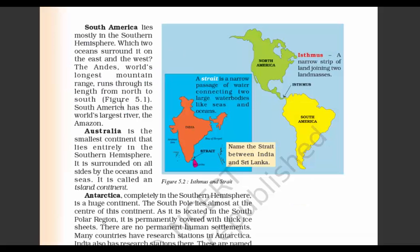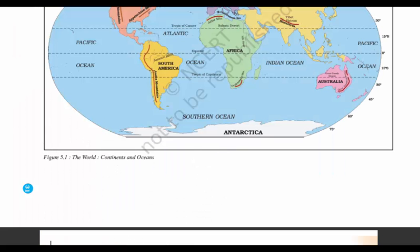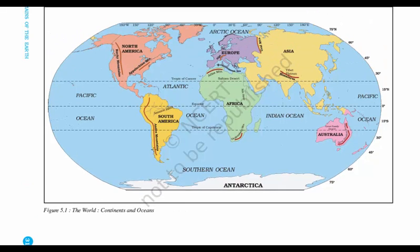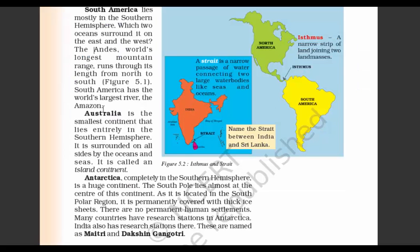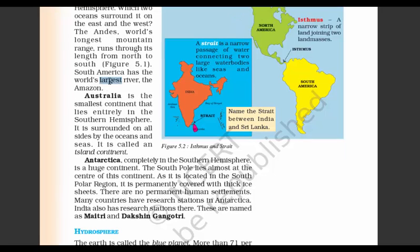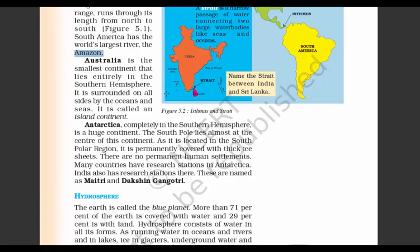Coming to South America — it lies in the Southern Hemisphere, surrounded by two oceans on the East and West. Another point of fact: the longest chain of mountains is there, which is called the Andes. You can see this huge long chain of mountains along their western shoreline. South America also has the world's largest river — remember, it's the world's largest river, not the longest. The largest river is the Amazon and the longest river is the Nile.